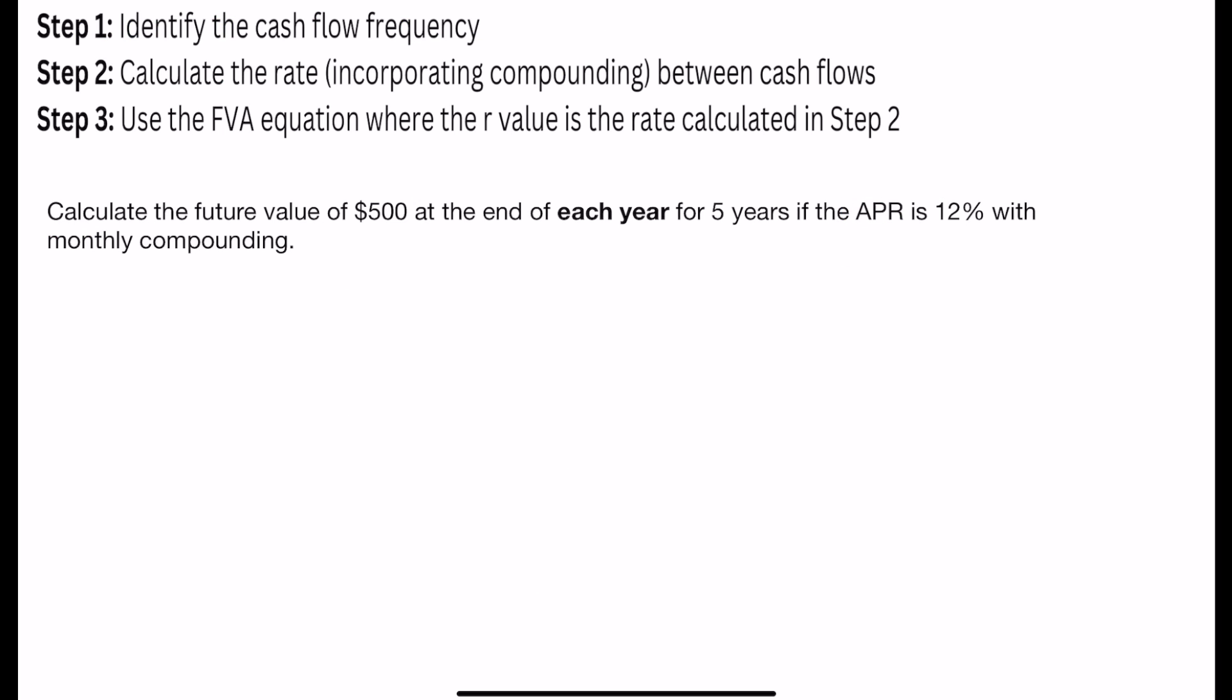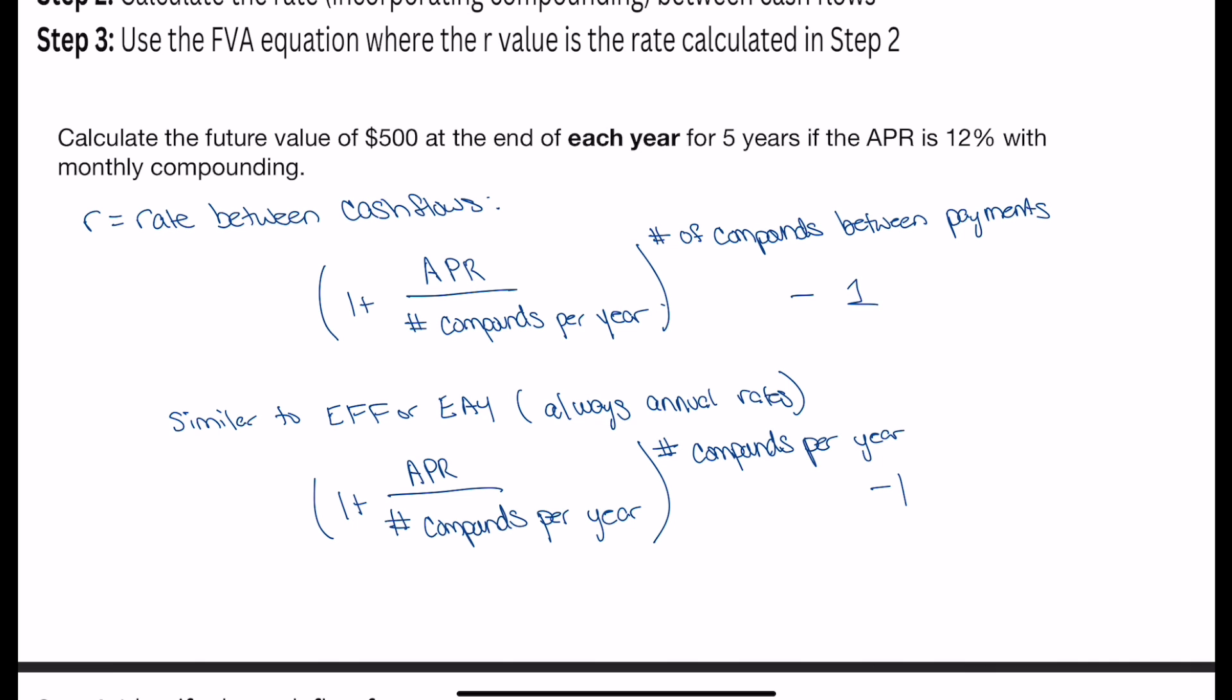So if I wanted to write one equation that summarized what that R value is, my R is my rate between cash flows. And the way I can calculate it is, I'm going to do 1 plus my APR divided by the number of compounds per year. And then my exponent is going to be the number of compounds between payments minus 1.